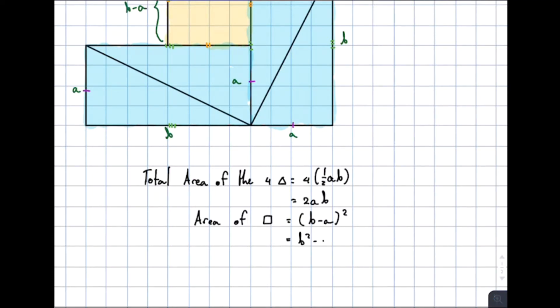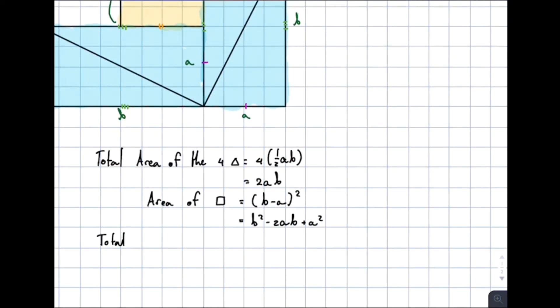Equal to b power 2 minus 2ab, plus a power 2. The total area of this square is equal to b power 2 plus a power 2.